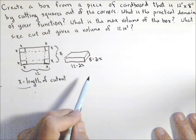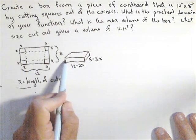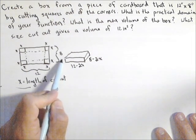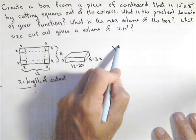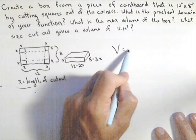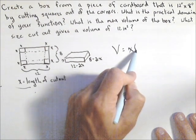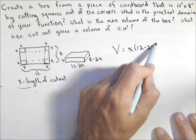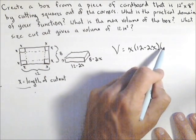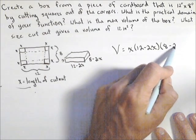Now there's one more piece to the volume and that's the height. Remember, this piece got folded up, so the height is just x. So the volume of this box in terms of x is our height times our length, which was 12 minus 2x times our width, which was 8 minus 2x.